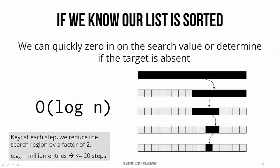Soon, we're either going to find the target value, or we're going to narrow down the search to a single element. And if we do this, we can basically turn a list of a million entries into a result in at most 20 steps.